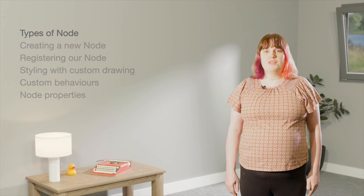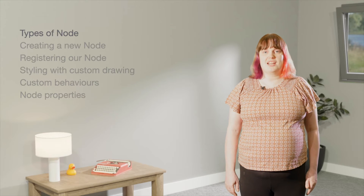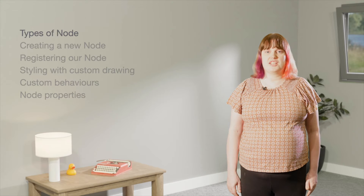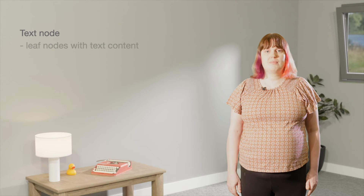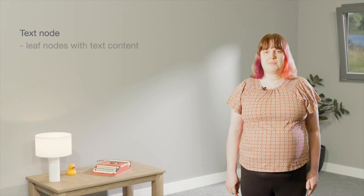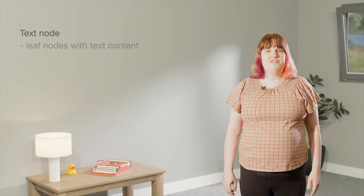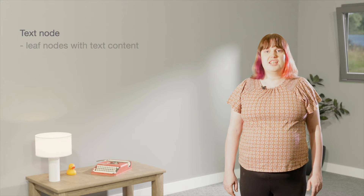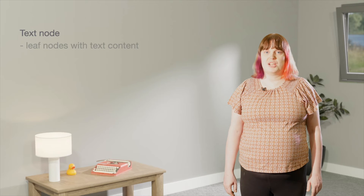There are a few different types of nodes in Lexical that you can extend: text node, element node, and decorator node. Text nodes have actual text content. They're leaf nodes, so they don't contain children. It wouldn't be appropriate for our banner node to be a text node, because an entire text node has to have the same style.